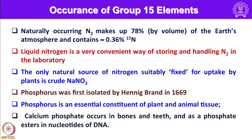Naturally occurring nitrogen makes up about 78% by volume of the earth's atmosphere and contains a very small percentage of ¹⁵N — about 0.36%. Liquid nitrogen is a very convenient way of storing and handling nitrogen in the laboratory. The only natural source of nitrogen suitably fixed for plant uptake is crude sodium nitrate. Phosphorus is an essential constituent of plant and animal tissue, and calcium phosphate occurs in bones and teeth, and as a phosphate ester in nucleotides of DNA.